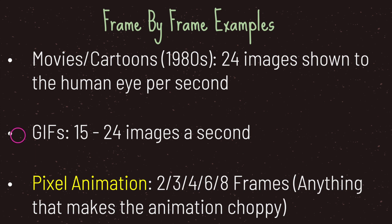Next on the list is GIFs. When you see GIFs online, they are usually shown at 15 frames per second. At 15 frames per second they still show movement, but your brain sort of figures that something isn't right with what you're being shown. The last example is pixel animation, which is by far the most common example of frame by frame animation because pixel animation purposely tries to make the animation choppy by showing the least amount of frames per second.